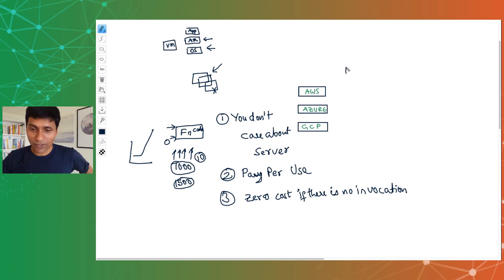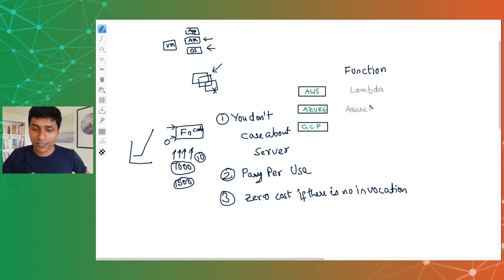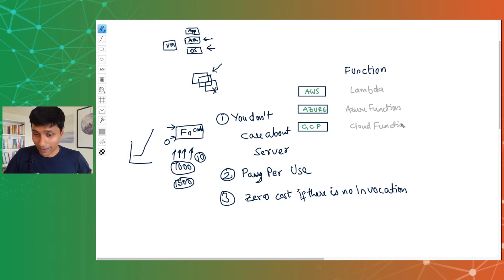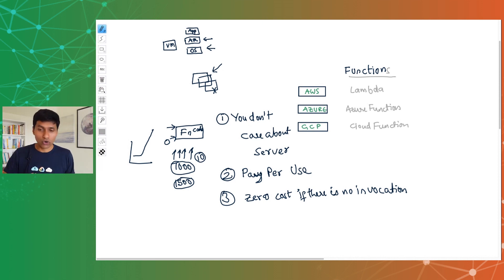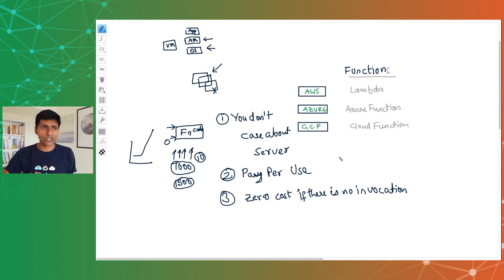A lot of people talk about serverless functions. Whenever we talk about serverless, the first thing we discuss is functions. In AWS, the function service is AWS Lambda. In Azure, it's Azure Functions. In Google Cloud, it's Cloud Functions. These three are the serverless function services. All of them support common languages — Python, Java, C#, Go. All that you need to provide is code and a little bit of configuration, such as how much memory you want for each instance of your Lambda, Azure, or Cloud function. Other than that, all you need to focus on is just the code.